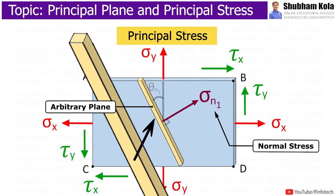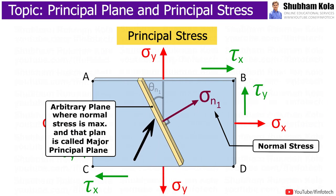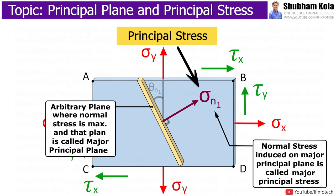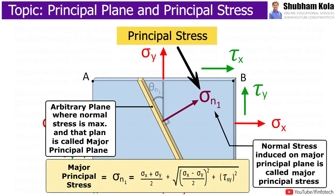Now, at certain angle of theta, we have a plane which carries maximum normal stress and that plane is called major principal plane. And normal stress induced on that plane is called major principal stress. And major principal stress, that is sigma n1, is calculated by this formula.